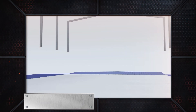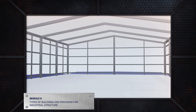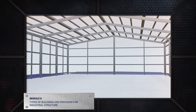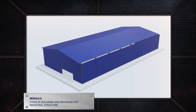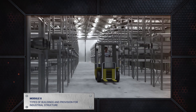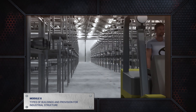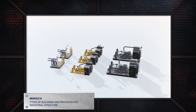Module 8 covers the design and construction of industrial buildings that manufacture specialized equipment. This includes the design and construction of warehouses, factories, and power plants, to name a few.